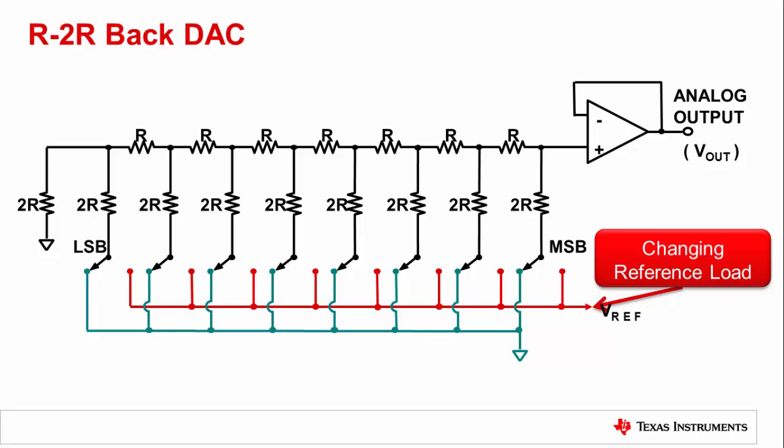Generally, it is undesirable for a reference source to see a dynamic change in impedance because it requires time for the reference voltage to settle to the new impedance. If the application calls for rapid cycling through codes, there may not be time to wait while the reference settles with each transition. For that reason, it is highly recommended that any R2R DAC application includes a reference buffer.